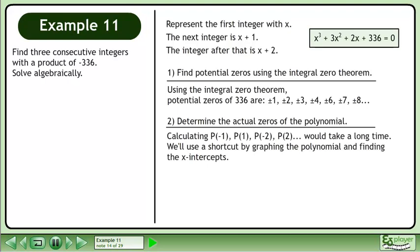Calculating p at negative 1, p at 1, p at negative 2, p at 2, and so on would take a long time. We'll use a shortcut by graphing the polynomial and finding the x-intercepts.